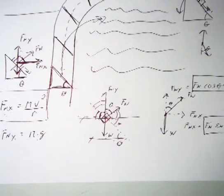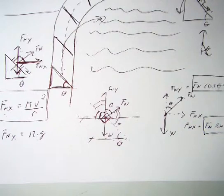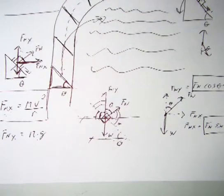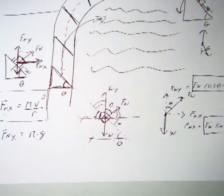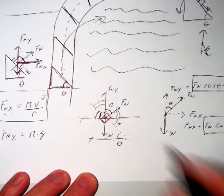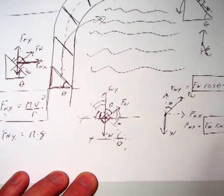The y-component of the normal force equals weight — that makes sense from our free body diagram. The normal force in the x-direction is providing our centripetal force. The normal force in the y-direction equals the normal force times cosine theta, which equals mass times gravity. The normal force in the x-direction equals the normal force times sine theta, which equals mv² divided by radius.